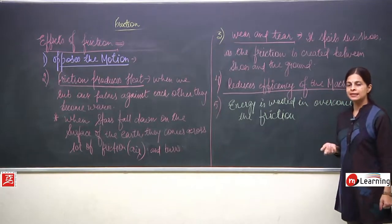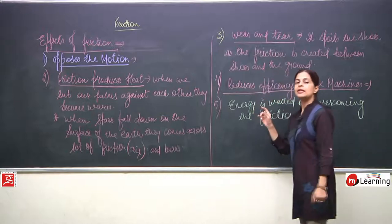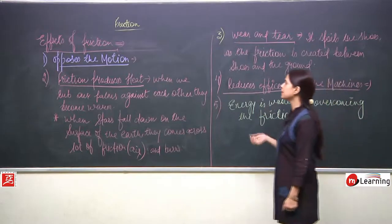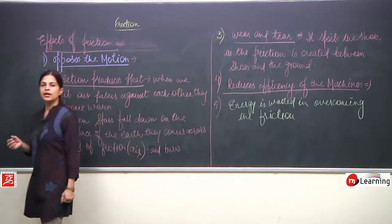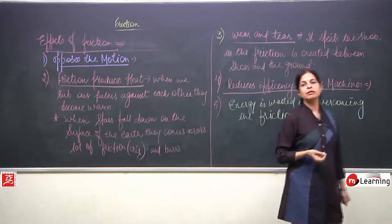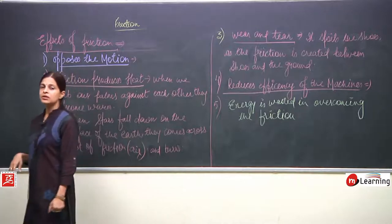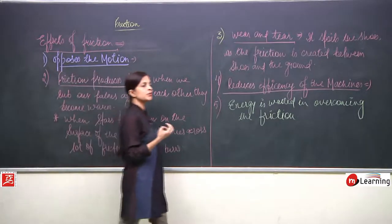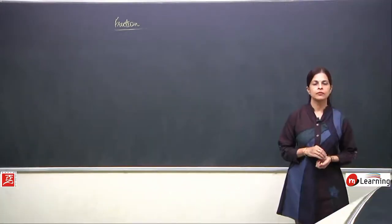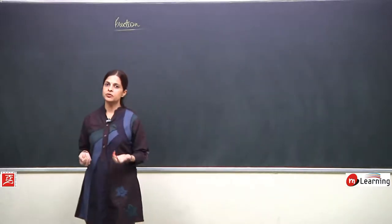We are studying the effects of friction: friction opposes motion, friction produces heat, causing palms to warm when rubbed and stars to catch fire due to excess friction; wear and tear of machines and shoes; and lot of energy gets wasted due to friction. So can we reduce friction? We will now talk about the ways to reduce friction.